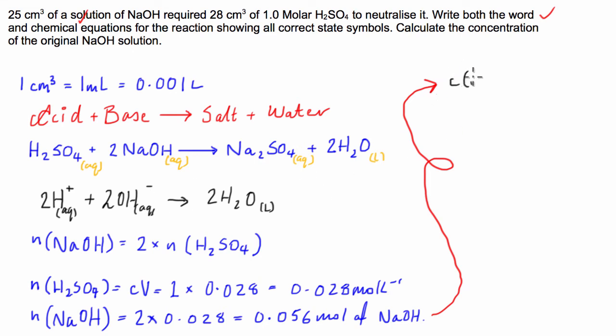We need the concentration of NaOH and that's equal to the number of moles divided by the volume, which is equal to 0.056 divided by 0.025 and we find that to be equal to 2.24 moles per liter to the negative one of NaOH.